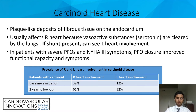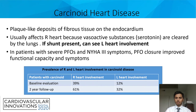Now let's look at background on carcinoid heart disease, best characterized by plaque-like deposits of fibrous tissue on the endocardium and valves. It usually affects the right heart much more than the left heart. The reason being that vasoactive substances like serotonin, which are implicated in the pathogenesis of the disease, are cleared out by the lungs. If a shunt is present, however, you can see left heart involvement.